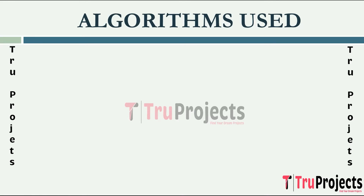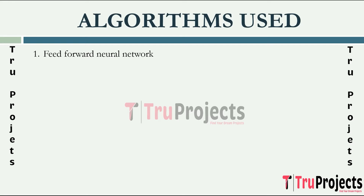The algorithms used for flood forecasting are as follows. A Feed Forward Neural Network (FFNN) is a fundamental type of artificial neural network where information flows in one direction. Each neuron in one layer connects to every neuron in the subsequent layer, and there are no cycles or loops. Information travels from input nodes through one or more hidden layers to output nodes without feedback connections. FFNNs are utilized in this project for their capability to model complex relationships between input and output data, enabling accurate predictions for flood occurrences. Their scalability allows handling of large datasets, while ease of training and interpretability facilitate efficient development of the predictive model.